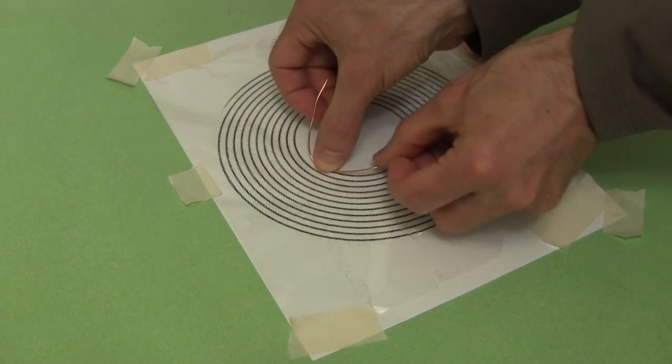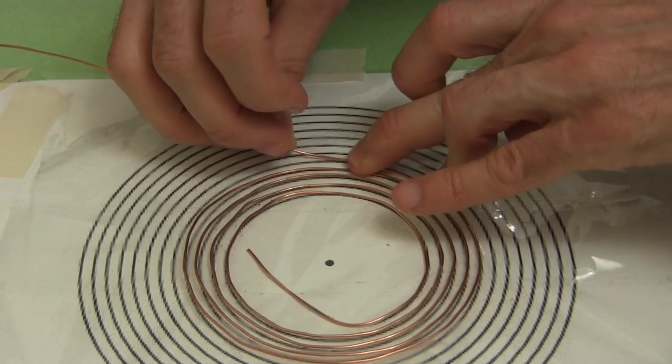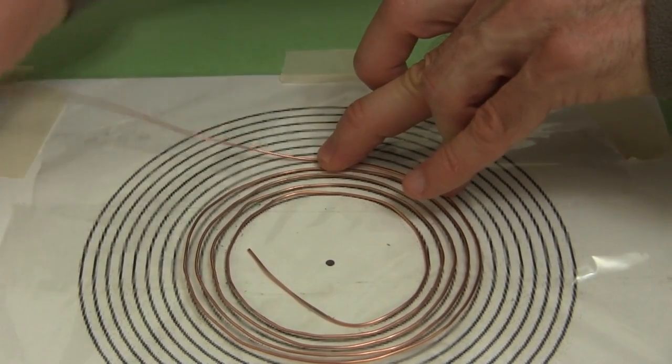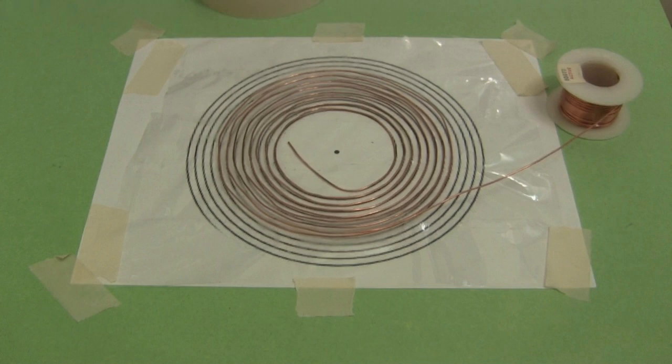Next start pressing the bare wire onto the tape, following the spiral shape. Notice that I left a length at the beginning, that's for connecting to the high voltage power supply later. I stop at 8 turns, just in case, even though I calculated I'd need only 6 or less.